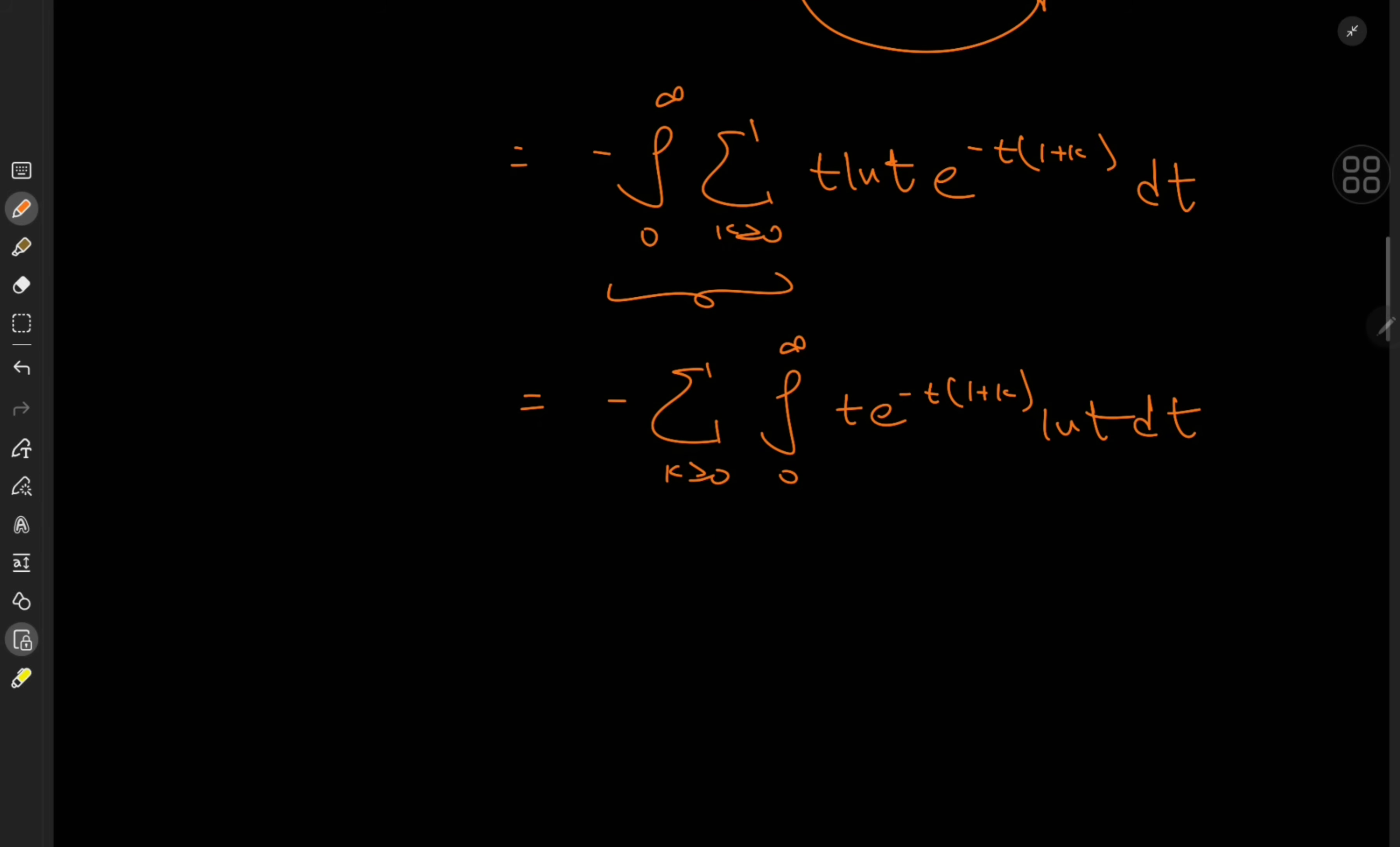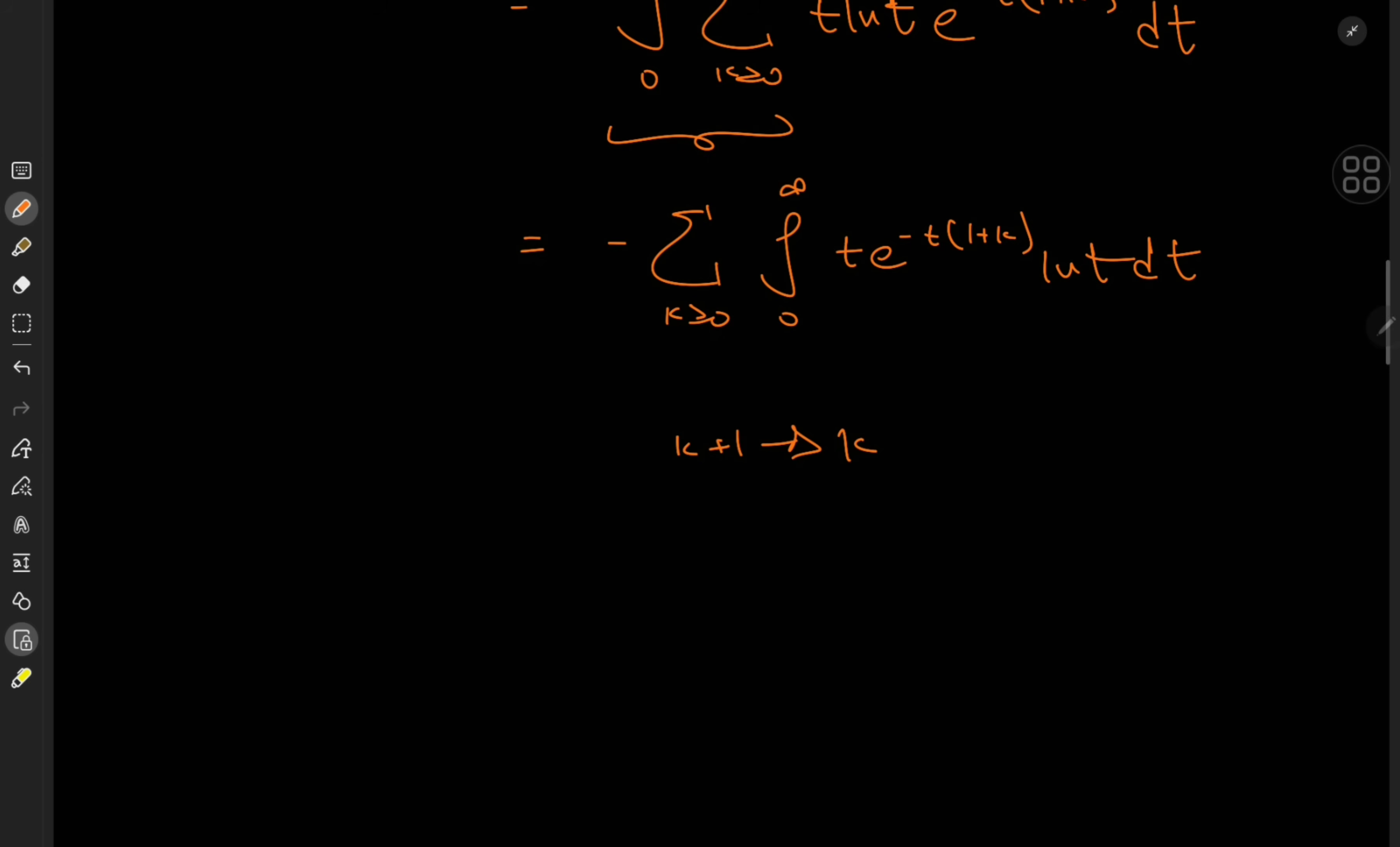Now, there are clearly no problems regarding convergence thanks to this exponential term acting as some kind of damping factor. So we can switch up the order of the integration and summation operators and get the sum over k of the integrals from 0 to infinity of t times e to the minus t times 1 plus k log t dt. But I might as well go from 1 plus k to k. So I'm just gonna transform the index variable a bit, shift it. And this implies that the target integral is now negative of the sum over the positive integers k of the integrals from 0 to infinity t times e to the negative tk log t dt.